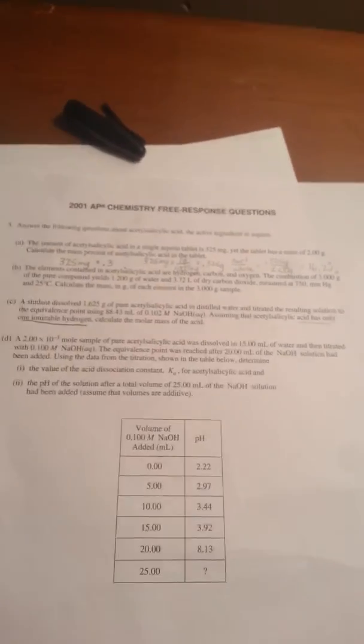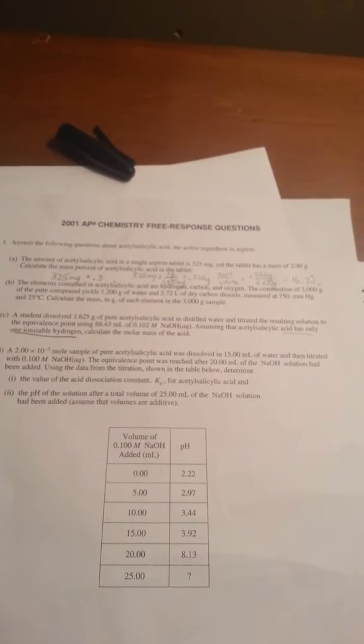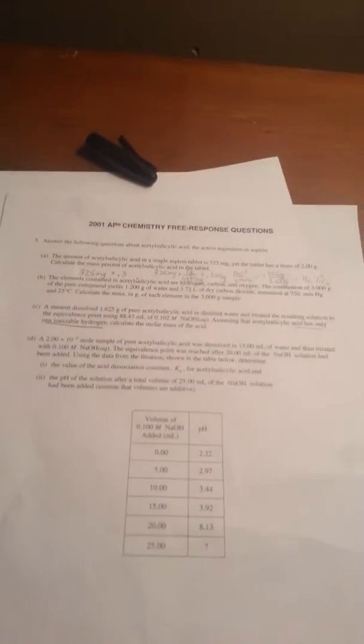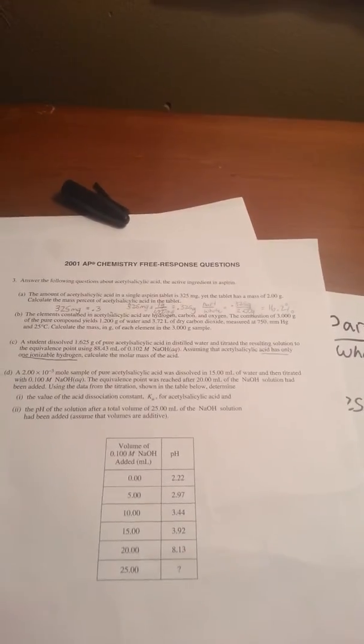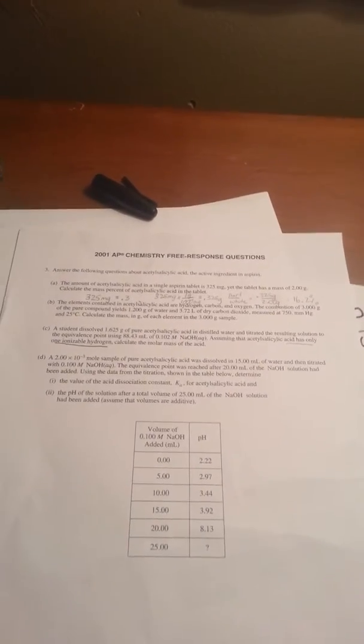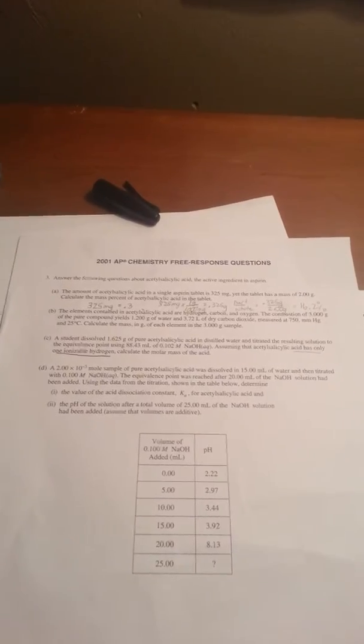Now on to part C. Students dissolve 1.625 grams of pure acetylsalicylic acid in distilled water and titrated the resulting solution to the equivalence point using 88.43 milliliters of 0.102 molar NaOH. Assuming that the acetylsalicylic acid has only one ionizable hydrogen - underline that - calculate the molar mass of the acid.